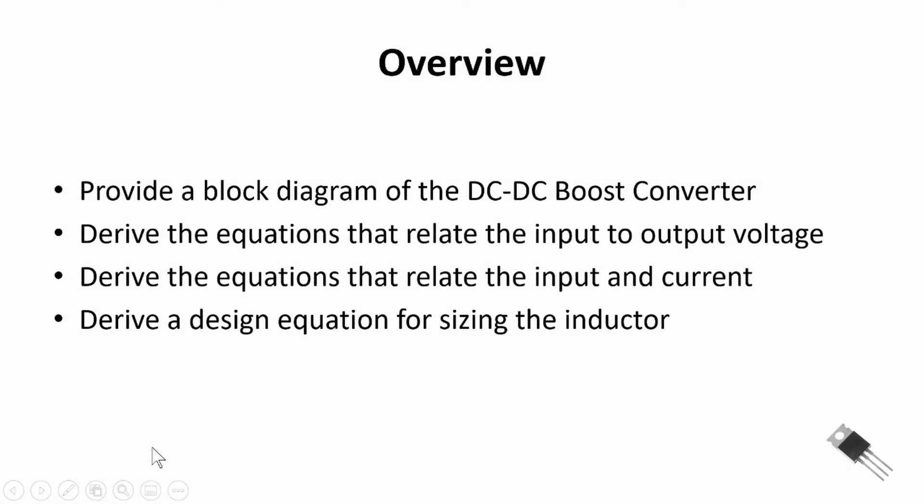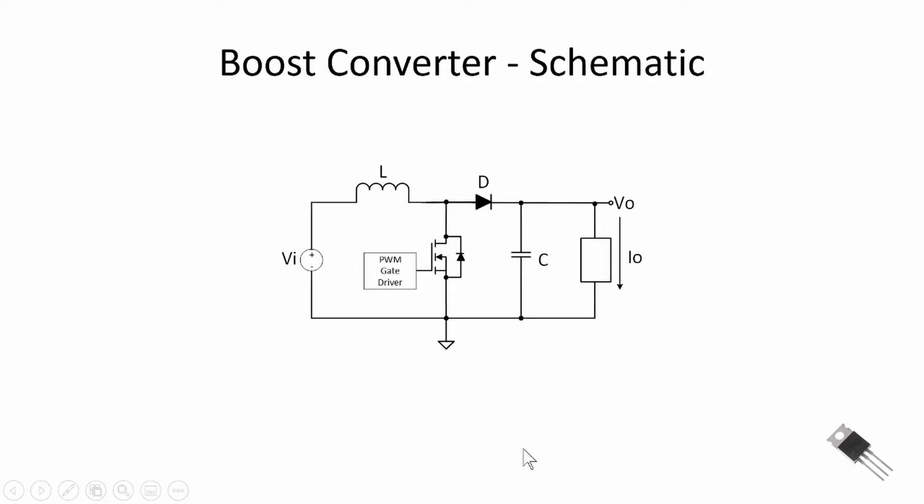Looking at the overview first, we'll provide a block diagram of the DC to DC boost converter, then derive the equations relating input voltage to output voltage, and after that, equations relating input current to output current. In a boost converter, output voltage is greater than input voltage, and we have a reciprocal relationship with current where output current is less than input current — governed by conservation of energy. Finally, we'll derive a design equation for sizing the inductor, which controls the ripple current through the circuit.